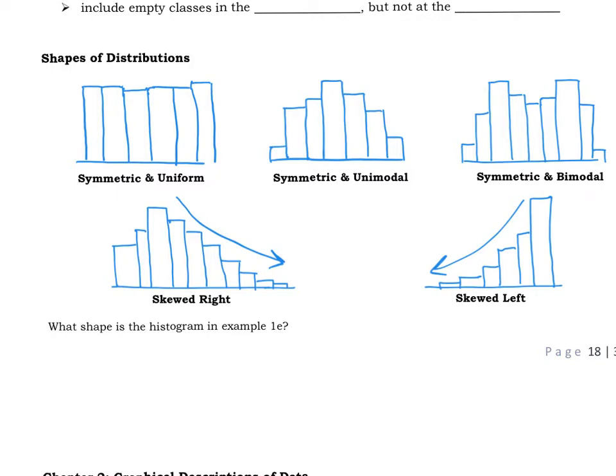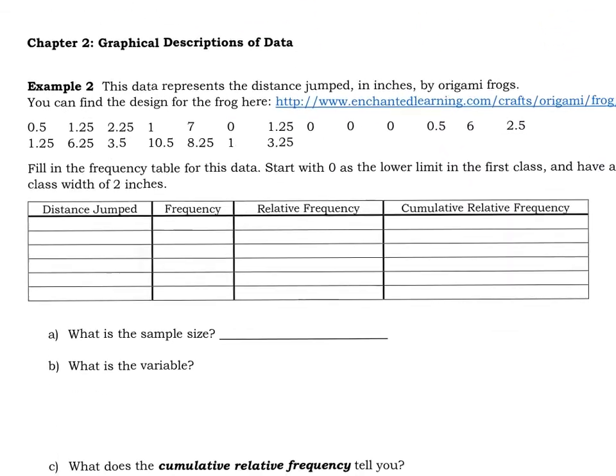Based on that, if you go back up to the top of your page where we did the histogram for the ticket prices for NFL home games, what shape is it? Hopefully you determine that that one is definitely skewed to the right. All right, moving on to the next page.